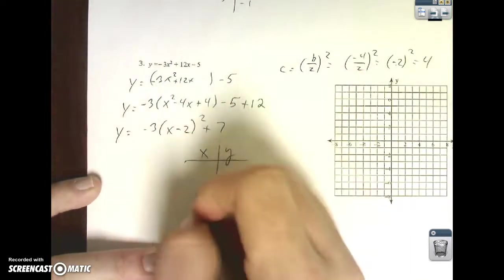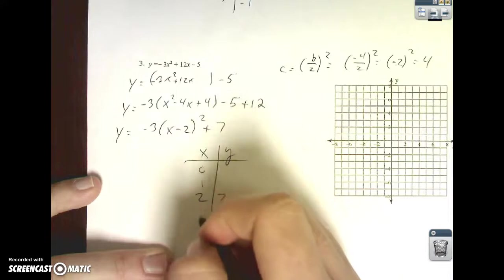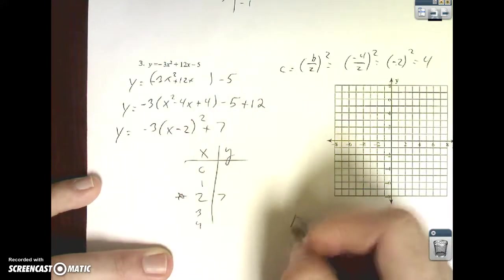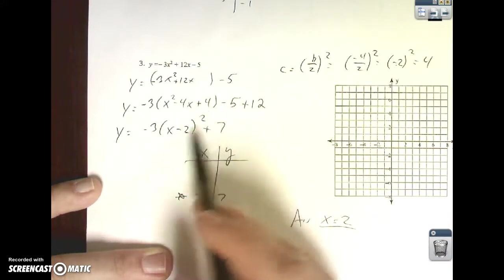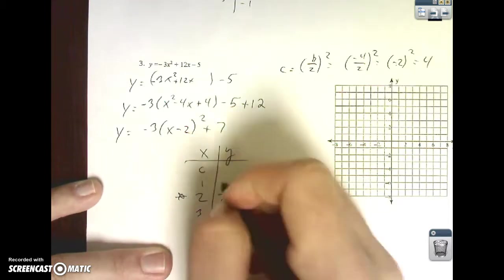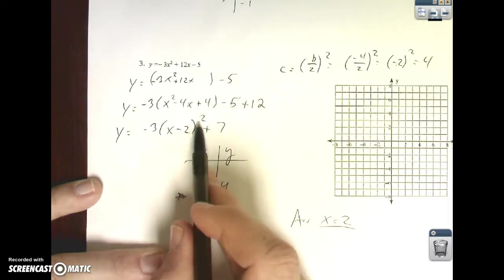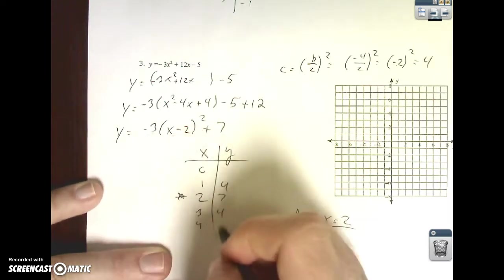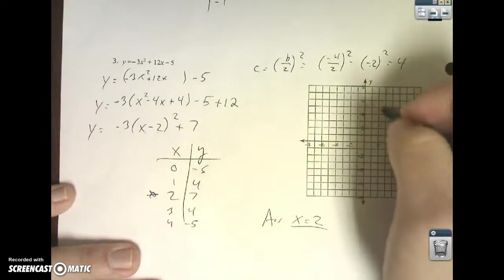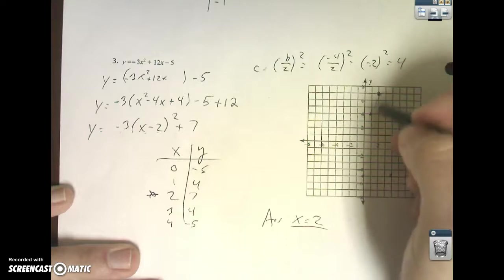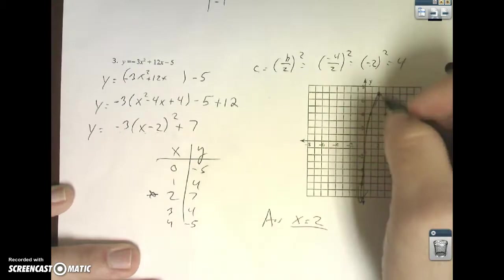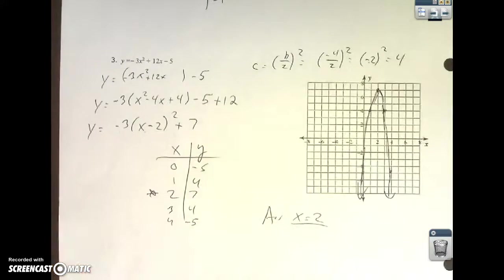Now it's, let's see here, 2, 7, go back, here's my vertex, my AOS is x equals 2. If I plug a 3 in here, 3 minus 2 is 1, 1 squared is 1, times negative 3 is negative 3, plus 7 is 4. And then 4 is, 4 minus 2 is 2, 2 squared is 4, times negative 3 is negative 12, plus 7 is negative 5. So what that looks like over here, 2, 7, 1, 4, 3, 4. Okay, here we go.